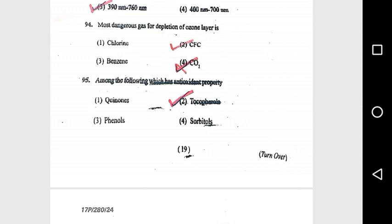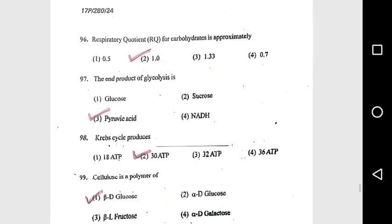Question 95: Among the following, which has antioxidant property? Tocopherol. Question 96: Respiratory quotient (RQ) for carbohydrate is approximately 1.0. Question 97: The end product of glycolysis is pyruvic acid. Question 98: The Krebs cycle produces 13 ATPs.